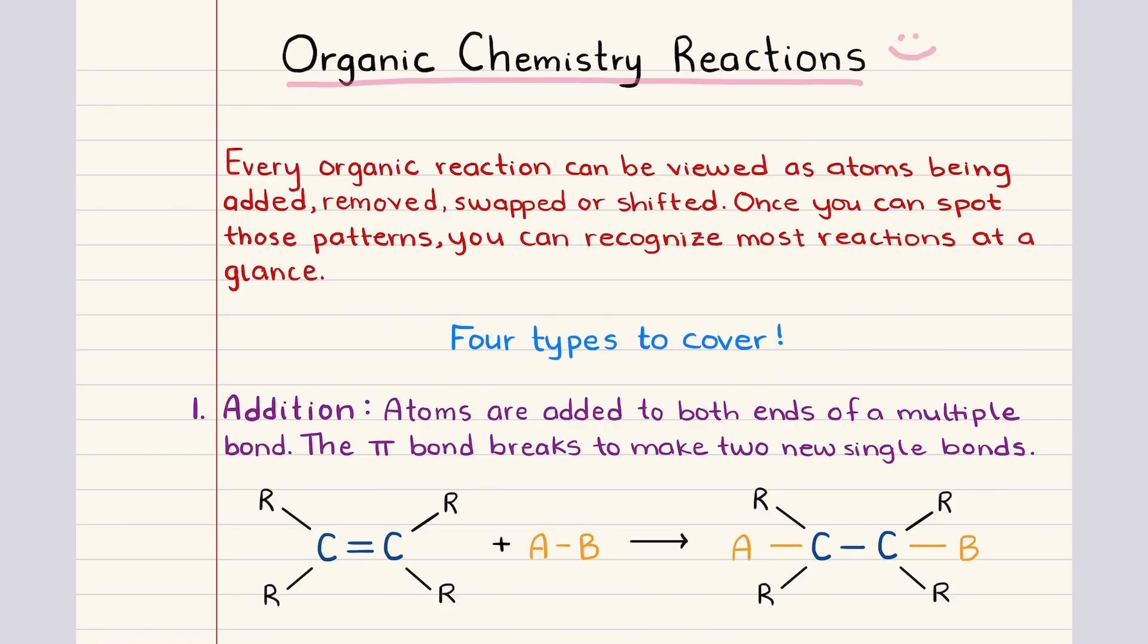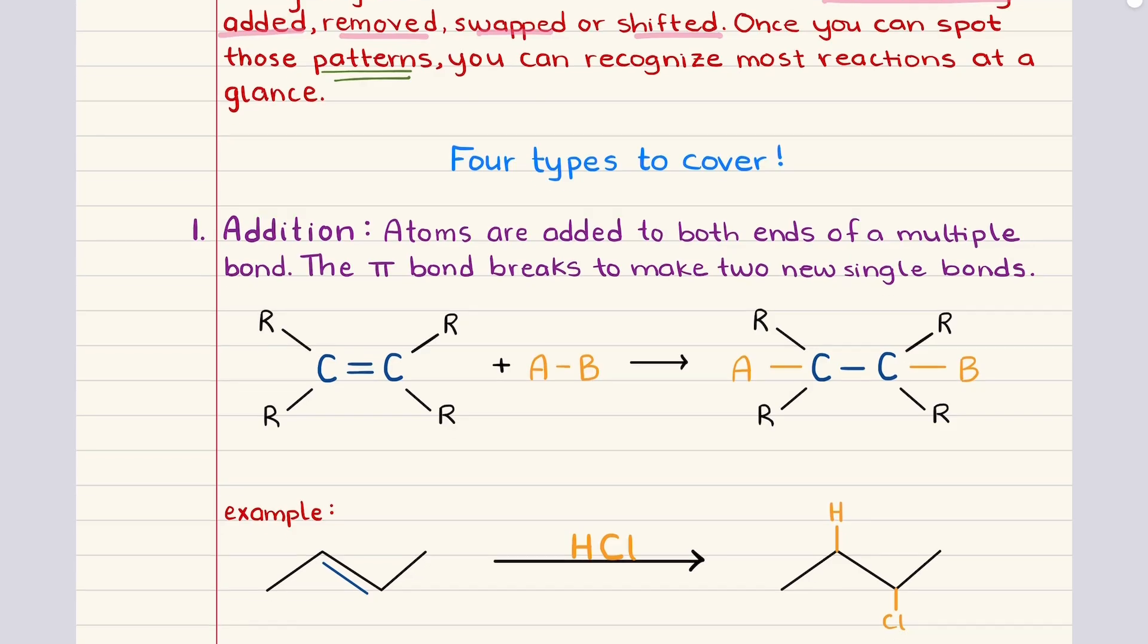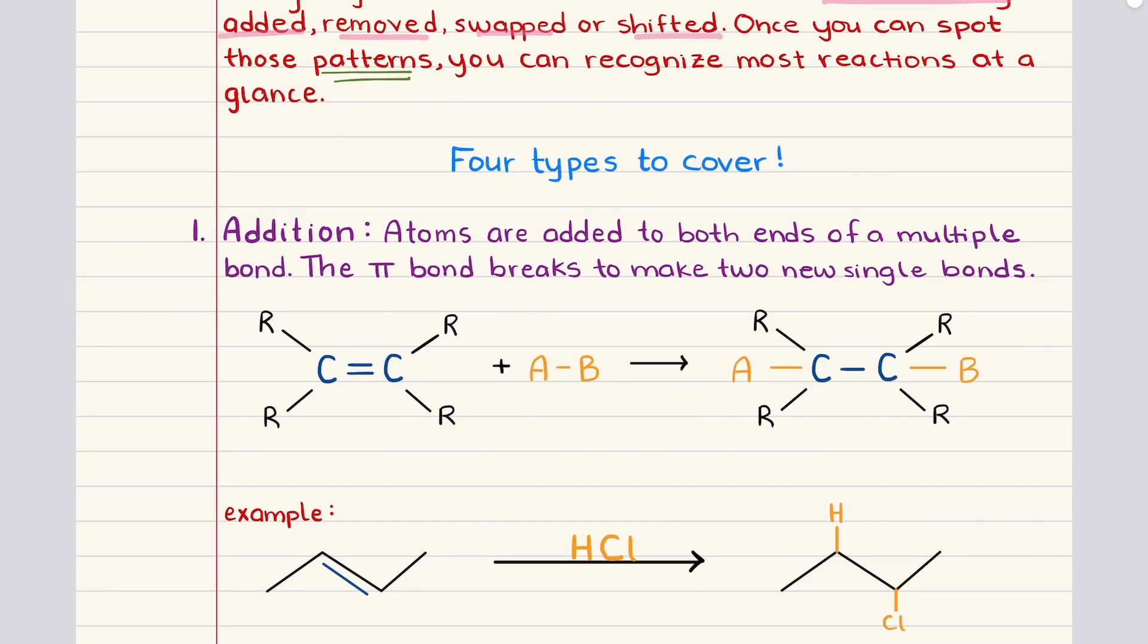Every organic reaction can be viewed as atoms being added, swapped, removed, or shifted. And when we analyze reactions in this way, the long list of mechanisms you see in organic chemistry become much easier to organize because most reactions follow a set of predictable patterns. To begin, it helps to recognize that a large number of reactions can be grouped into four general categories.